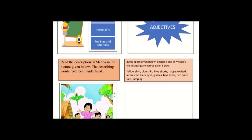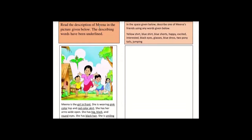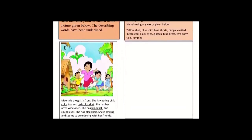Here is an example. Read the description of Mina in the picture given below — the describing words have been underlined. This is a very old cartoon from when we were kids — Mina and Pappu. Here is Mina's description: Mina is the girl in front. She is wearing a pink colored top and red colored skirt. She has her arms wide open. She has big, black, and round eyes. She has black hair. She is smiling and seems to be enjoying with her friends.